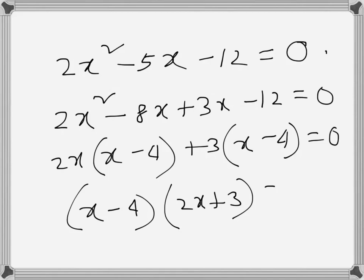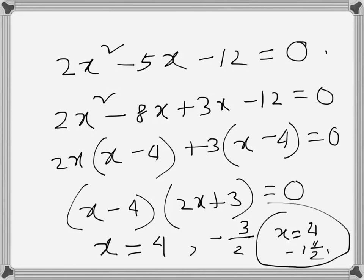So the possible values of x are x equals 4 and minus 3 over 2, or can be written as minus one and a half. So these are the two possible values of x.